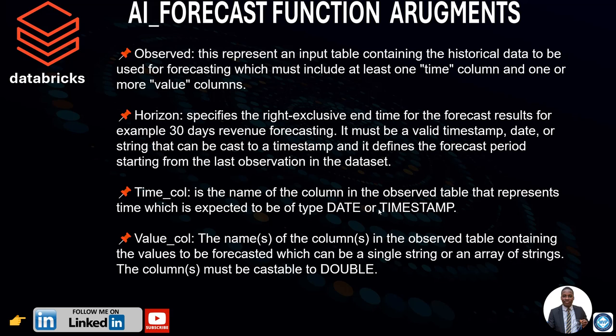The first argument is 'observed'. This represents a table containing the historical data to be used for forecasting, which must include at least one time column and one or more value columns. The second argument is 'horizon'. This specifies the right-exclusive end time for the forecast result — for example, 30 days ahead. It must be a valid timestamp, date, or string that can be cast into a timestamp, and it defines the forecast period starting from the last observation in the dataset.